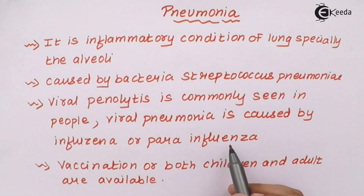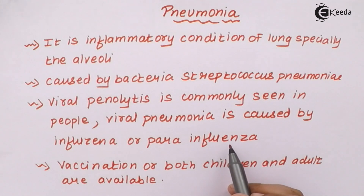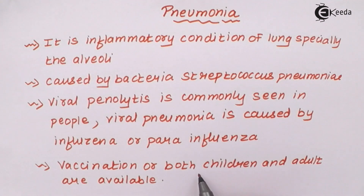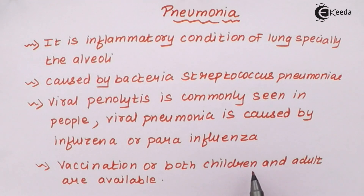Viral pneumonia symptoms are not as severe as those seen in young children. Pneumonia can be a little fatal in young children because their immune system is slowly and steadily developing. Vaccinations are available for both children and adults, and preventive vaccinations are given to children as well.